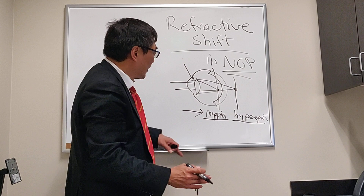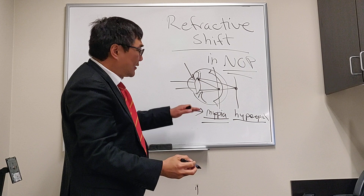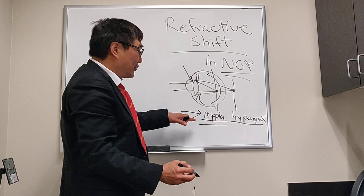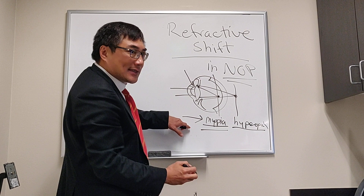For the anterior segment, certain medications can anteriorly rotate the ciliary body and produce a myopic shift. These are sulfa-derived medications, especially Topamax, but also Diamox. These drugs can shift the lens-iris diaphragm forward and cause angle closure. Topamax is one of the most common medications we see causing this.